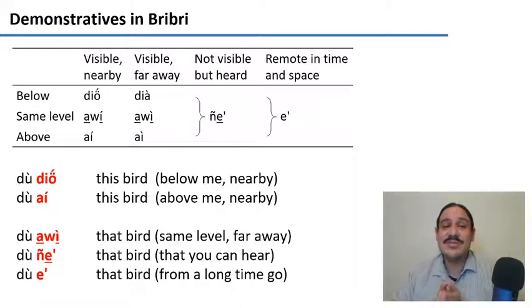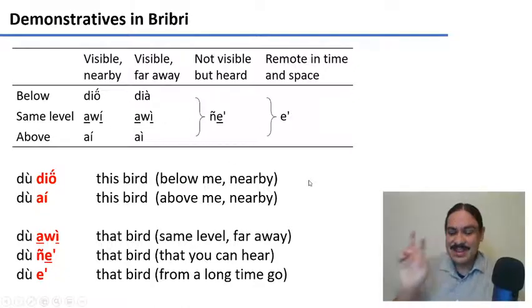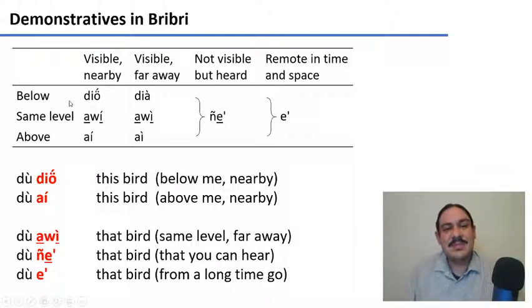BriBri has a particularly interesting and complex demonstrative system. In BriBri, we have eight words for this and that. And they're split like this first by whether something is below your field of view at the same level as your field of view or above your field of view.